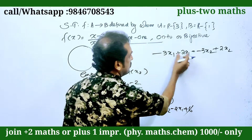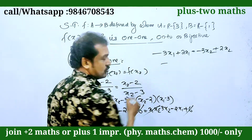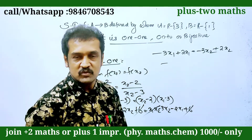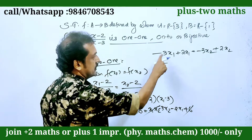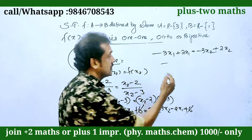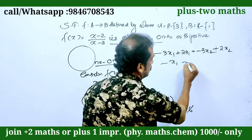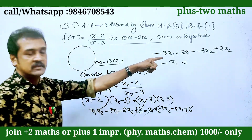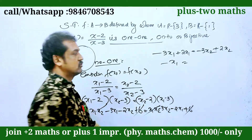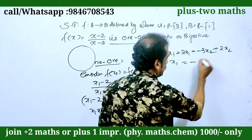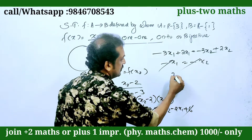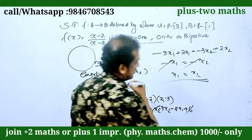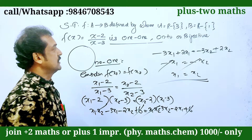Minus 3 plus 2 becomes minus 1. That is minus 3x1 plus 2x1 becomes minus x1. Right side: minus 3x2 plus 2x2 becomes minus x2. The x1x2 terms cancel. Therefore x1 equals x2. We get the answer. Therefore f is one-to-one.